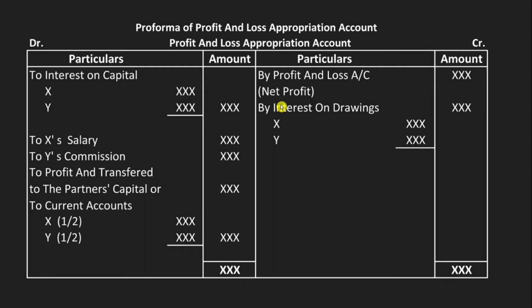The company creates this account as an extension of the Profit and Loss Account. On the credit side, we have the net profit from the Profit and Loss Account. The net profit is income for the company, and it is shown on the credit side of the Profit and Loss Appropriation Account.